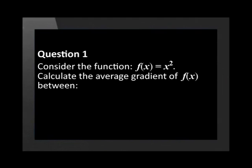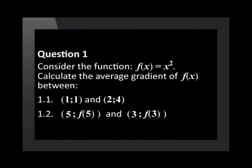Consider the function f of x is equal to x squared. Calculate the average gradient of f of x between 1, 1 and 2, 4, 5 and f of 5, and 3 and f of 3.